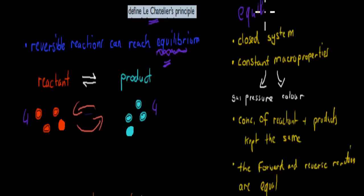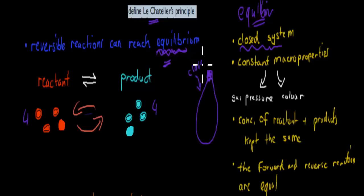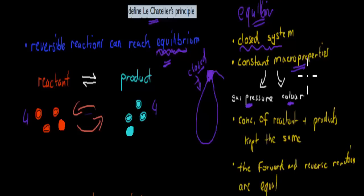For equilibrium to occur, we need the following conditions. First, we need a closed system. For example, with that Coke bottle — when the cap is on, the system is closed and we can reach equilibrium. But once we open the cap, it's not a closed system anymore. Second, we need constant macro properties. What I mean by that is gas pressure has to be kept constant, color has to be kept constant, and temperature as well.